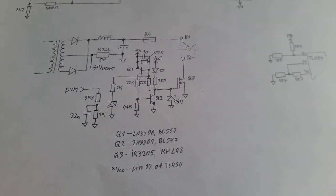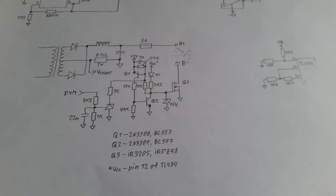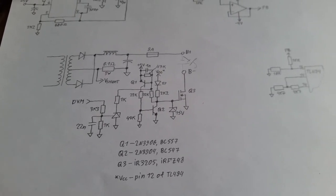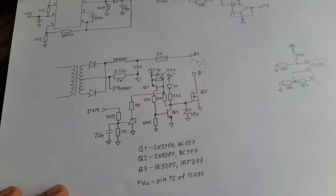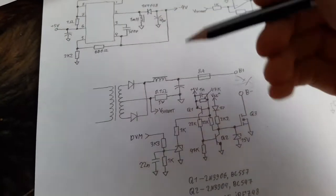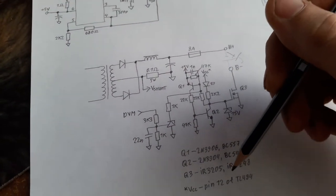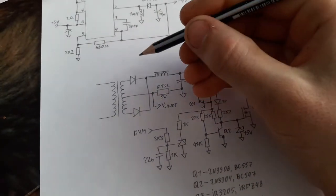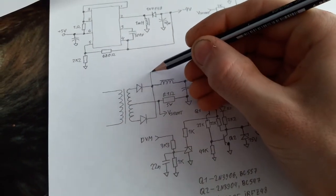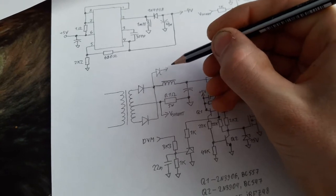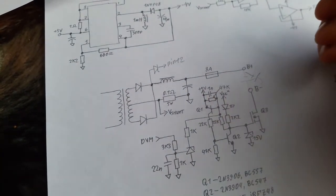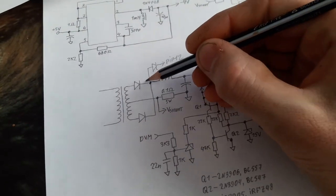In the ATX power supply there is a diode that is located between pin 12 of the TL494 and this node. So basically you have a diode going to pin 12. What you need to do is to break this connection.